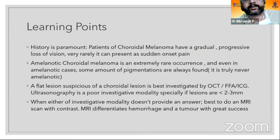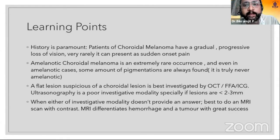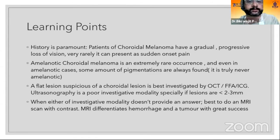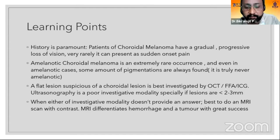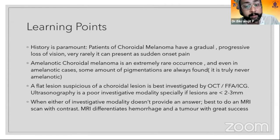The learning point from this case: choroidal melanoma is a very slow-growing lesion with gradual progressive vision loss — it will never present with sudden onset, except in a spontaneously necrotic melanoma. Also, amelanotic melanoma is a misnomer; even in an amelanotic melanoma, some pigmentation is found. Most importantly, in a flat lesion, especially two to three millimeters, it is always best to use OCT and angio rather than ultrasound. MRI is also useful to differentiate between a hemorrhage and a tumor.